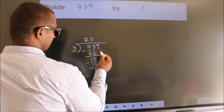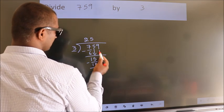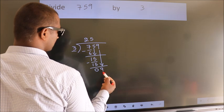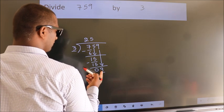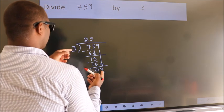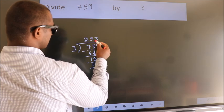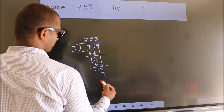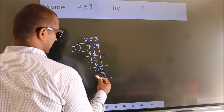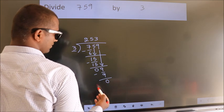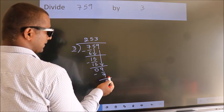After this, bring down the beside number. So 9 down. So 9. When do we get 9? In the 3 table, 3 times 3 is 9. Now we subtract. We get 0. No more numbers to bring it down.